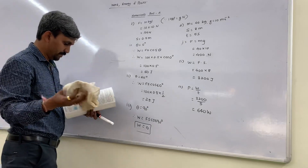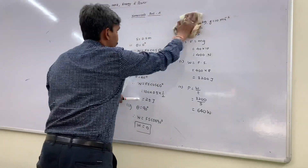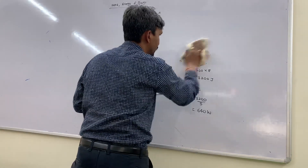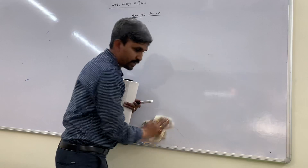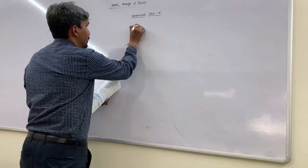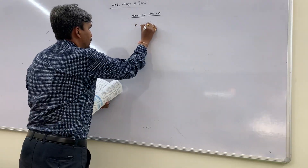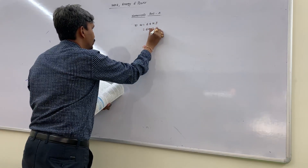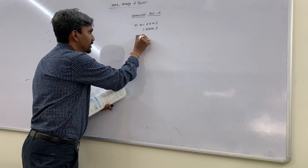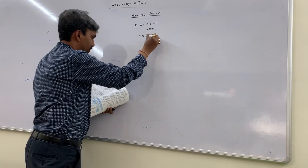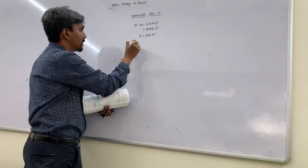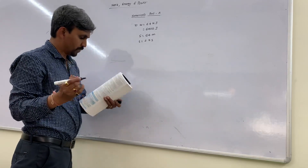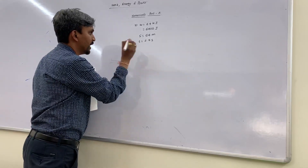Now, third numerical. Energy (which equals work) is given as 6.4 kilojoule = 6400 Joules. Displacement is 64 meters. Time is given as 2.5 seconds. First part: find force. Second part: find power in HP (horsepower).